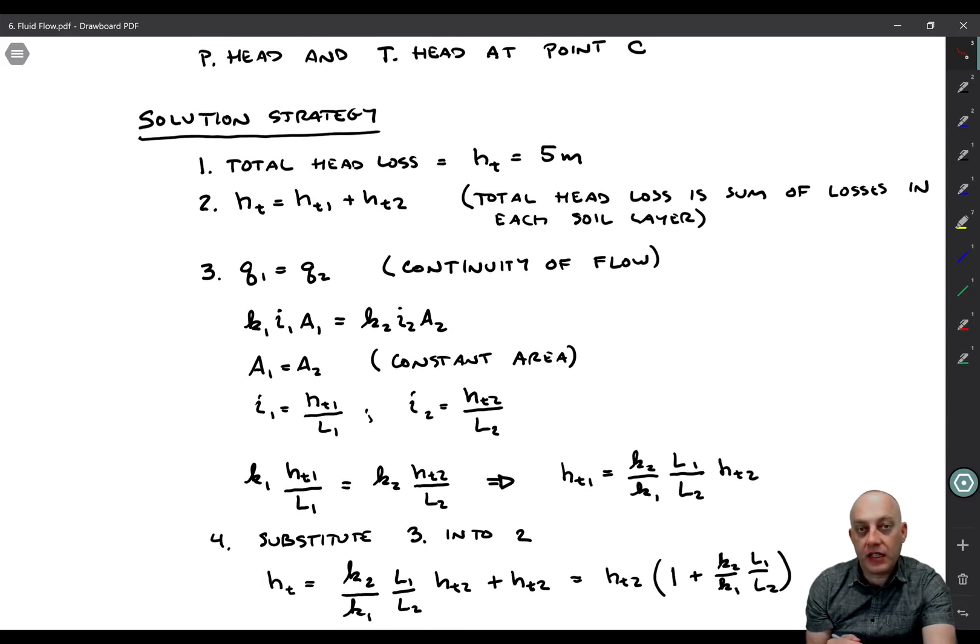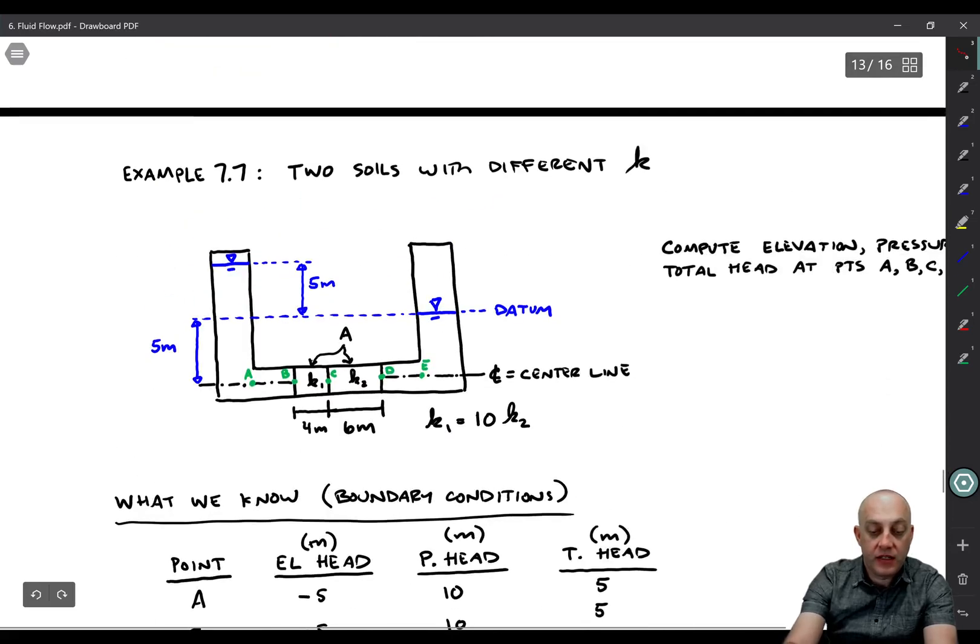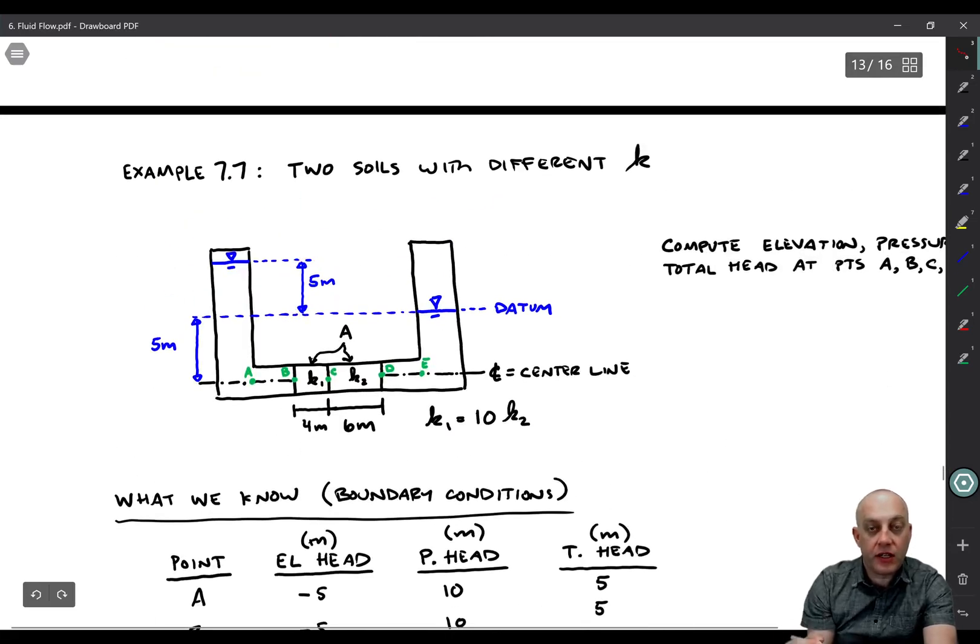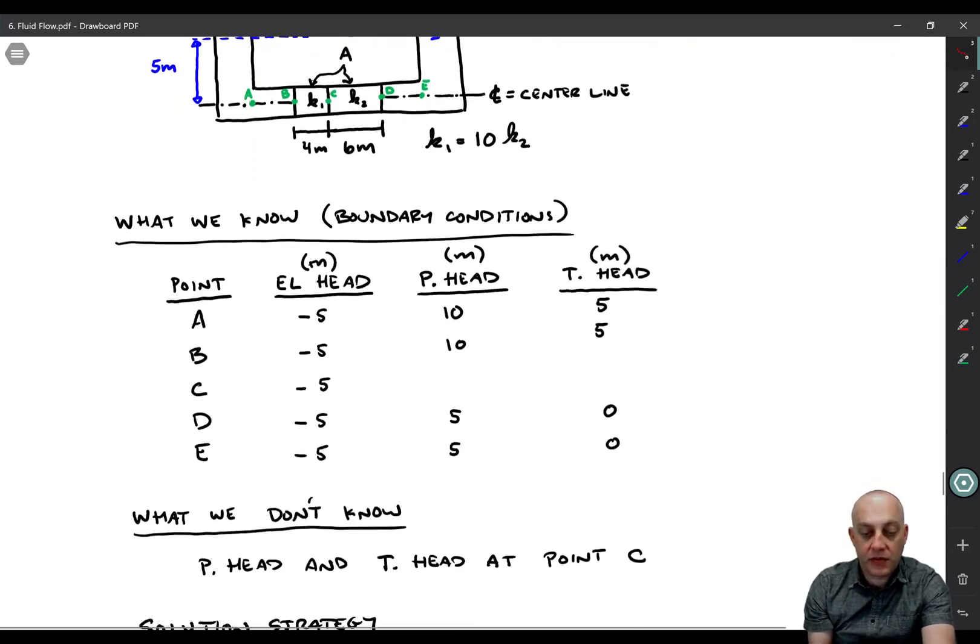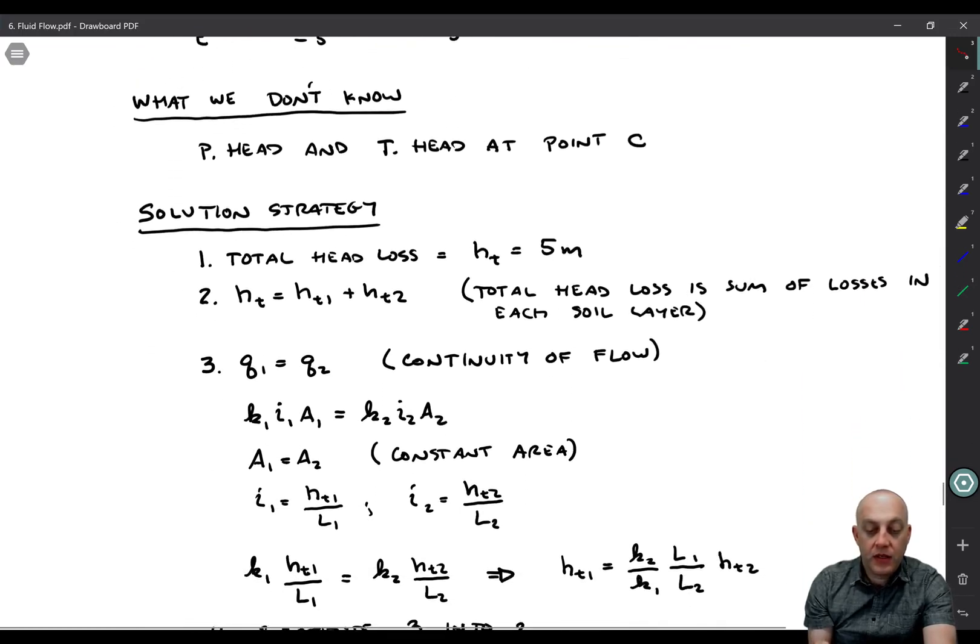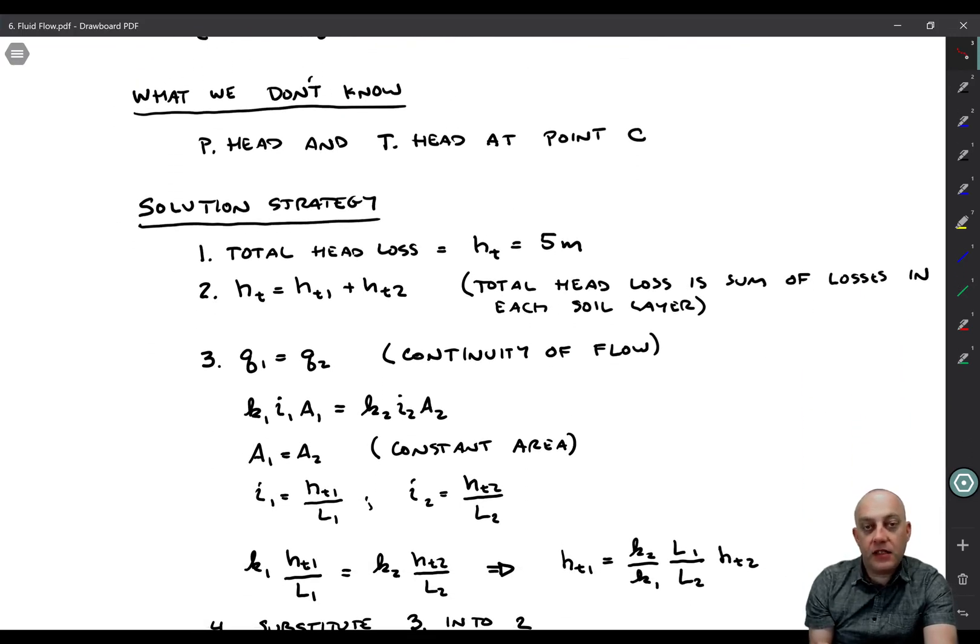Here's the solution strategy. First, the total head loss through the soil is five meters. We have a differential elevation and water level of five meters, therefore the head loss is five meters through the soil. The total head loss has to equal the head loss through layer one plus the head loss through layer two.